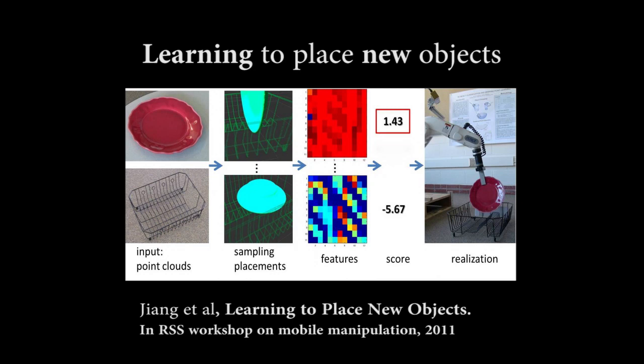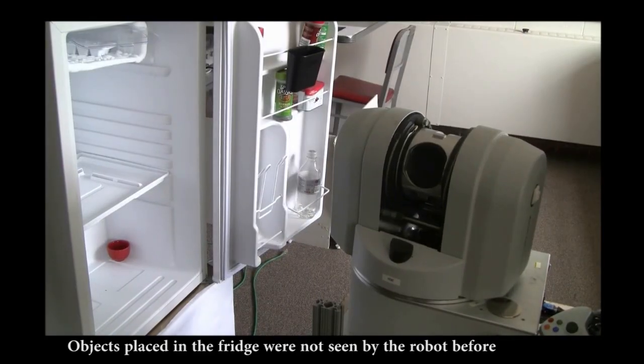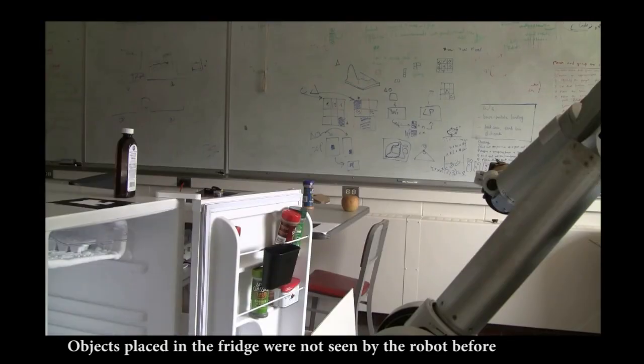We formulate it as a supervised learning problem. Through the following applications, we will explain why the learning algorithm is needed and how it performs. Our first task is to load items into a fridge. Every placement, such as where to place the bottles and the orientation of these bottles, are figured out by our learning algorithm.